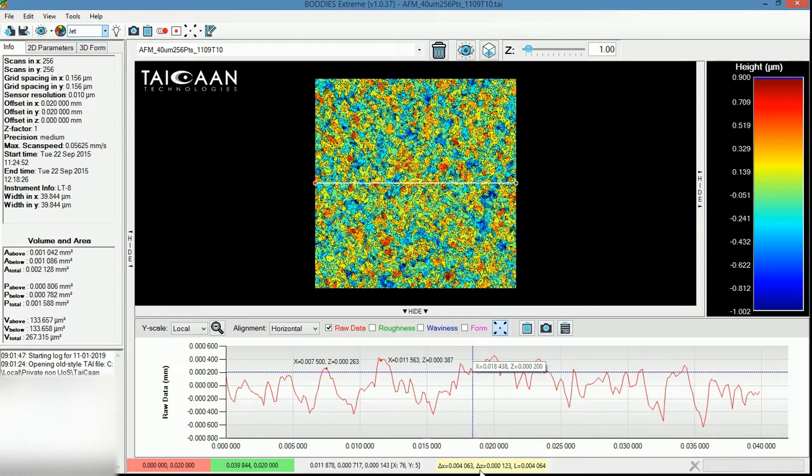And if you look at the box that I'm pointing to in the lower section of the screen here, you've now got the difference between those two points in X and in Z, and also the distance of the line between the two points. So first of all, you can see the distance between the two points in the X-axis, which is the horizontal axis, is 4.06 microns, and the difference in the height is 0.123 of a micron.